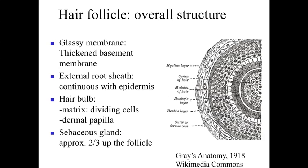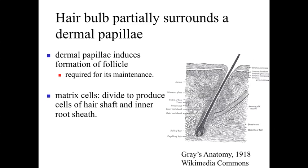Looking at the overall structure of the hair follicle, we'll see a sebaceous gland normally associated with the hair shaft. The hair bulb is this extension from the epidermis that engulfs or partially surrounds the dermal papillae. If we damage the dermal papillae, the hair bulb stops functioning and the follicle stops producing hair. The cells within the hair bulb are continuously dividing and producing cells that differentiate into the shaft of hair.